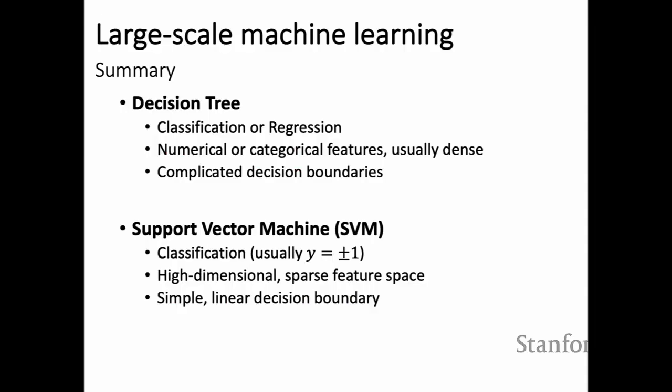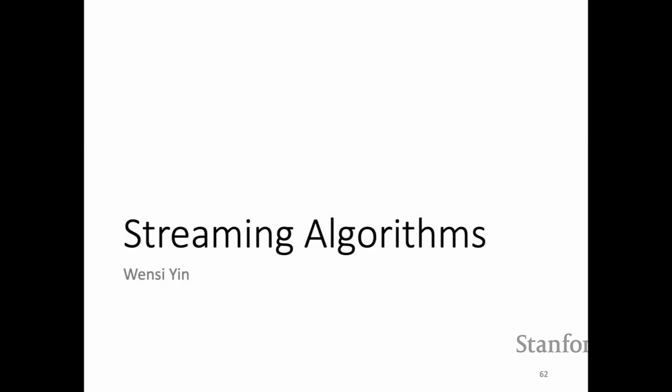In summary: decision trees work on both classification and regression problems and can use numerical and categorical features, building very complex decision boundaries. Support vector machines only work for classification — in the vanilla case, only binary classification. SVMs tend to work well in high-dimensional sparse feature spaces and give a simple linear decision boundary.